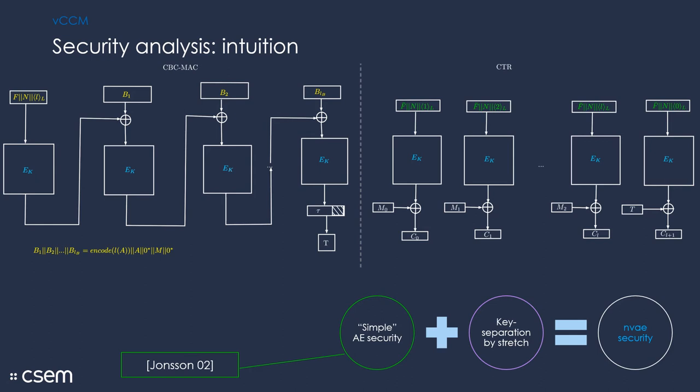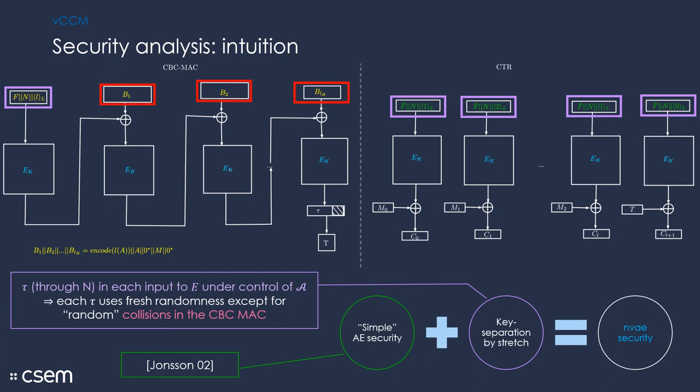Our security analysis uses the result where NVAE security is implied by simple AE security and key equivalent separation by stretch. The simple AE security of CCM has, of course, been established long time ago by Jonsson. So, for the key separation by stretch, we made the observation that the initial block cipher call in the CBC-MAC and all the block cipher calls in the counter mode use nonce as part of the input. And since we're putting tag length into the nonce, we're actually making sure that the block cipher inputs between tag lengths are not colliding and different tag lengths use fresh randomness.